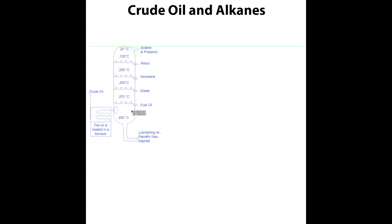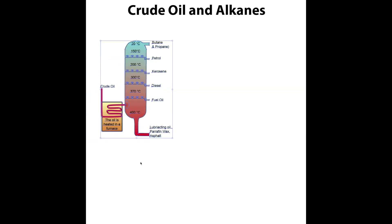Hi and welcome to this tutorial. This tutorial is going to cover the distillation products that can be found in crude oil, and they are mainly alkanes. I'm going to put a picture up here that's available on Wikipedia and similar sites, and I'll also put the picture up on the website so you can have a look at this diagram.